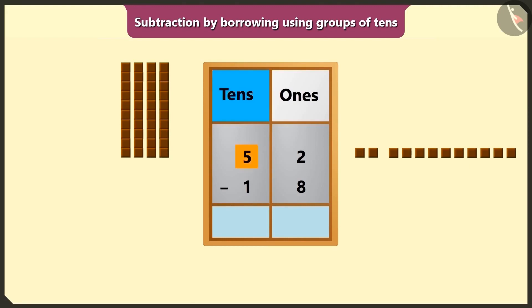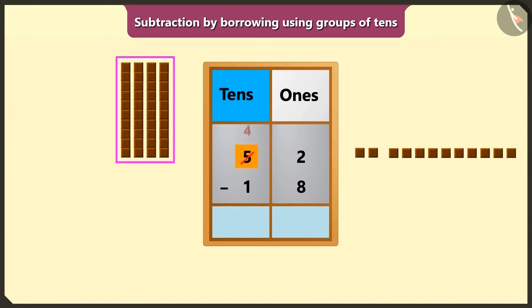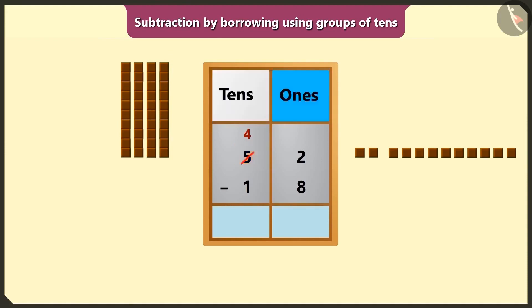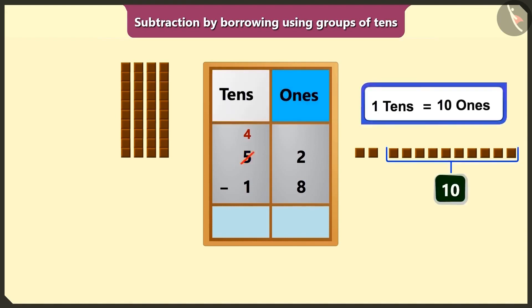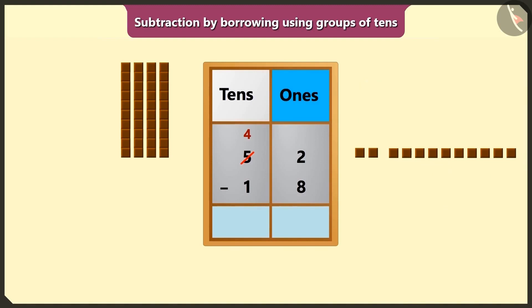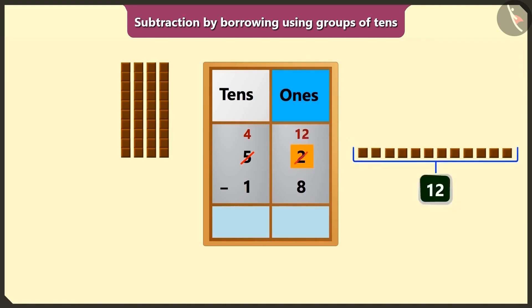Borrowing 1 ten from the 5 tens means subtracting 1 ten from 5 tens, which makes it 4 tens. So 1 ten will be less in the place of tens. Now in the box of ones it will be 1 borrowed ten equal to 10 ones, plus 2 ones — making 12 ones in the box of ones.